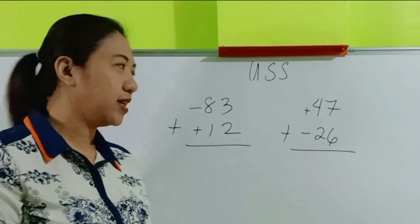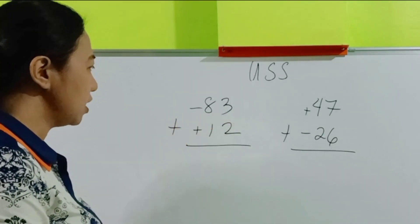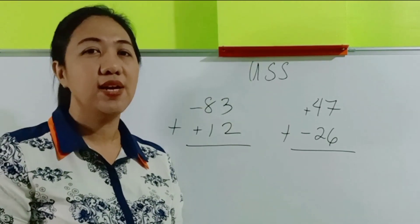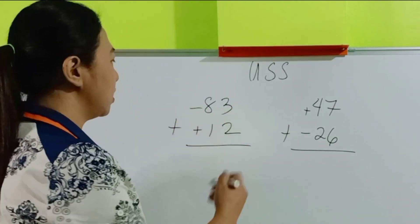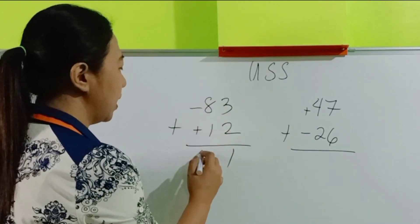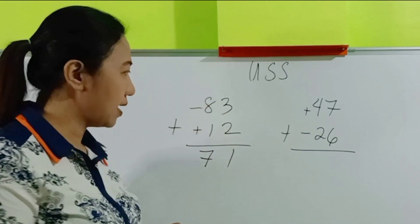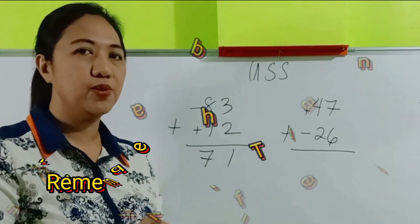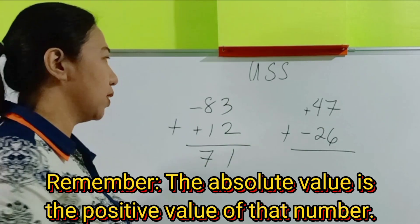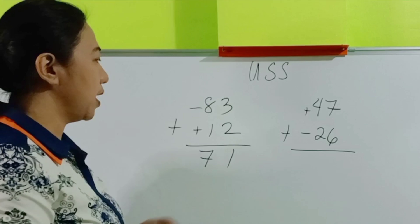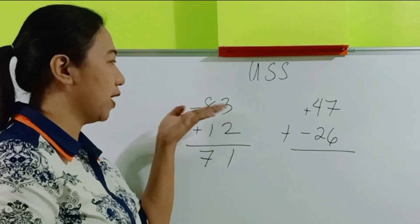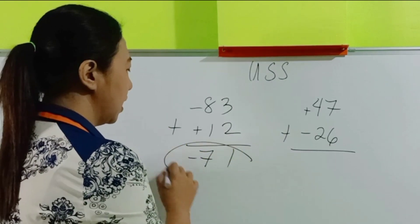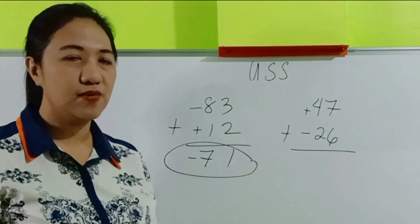We have more examples. Negative 83 plus positive 12. They don't have the same signs, so we have to subtract. 3 minus 2 is 1, and 8 minus 1 is 7. Let us follow the sign of the bigger digit in its absolute value — 83 is bigger than 12 — so we follow negative 83. The answer is negative 71.